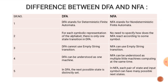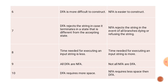DFA can be understood as one machine, while NFA can be understood as multiple little machines computing at the same time. In a DFA, the next possible state is distinctly defined. In NFA, each pair of state and input symbol can have many possible next states. DFA is more difficult to construct, whereas NFA is easier to construct. DFA rejects a string when the machine is in a state different from the accepting state.